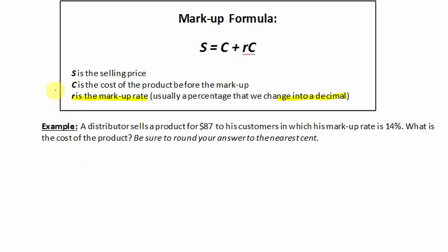In this example, we're going to discuss using the markup formula to find the cost of the product in which the distributor bought from his vendor. A distributor sells a product for $87 to his customers in which his markup rate is 14%. What is the cost of the product?